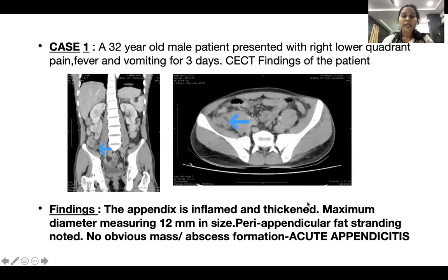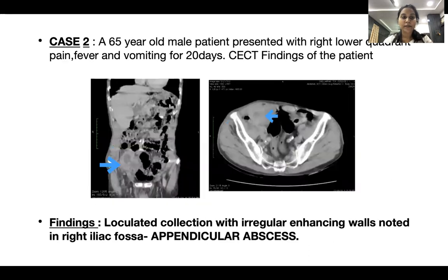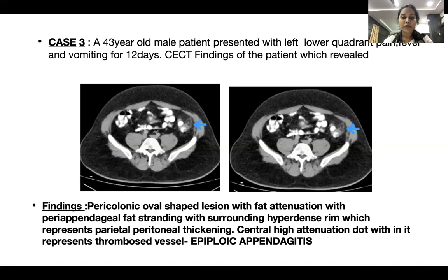Case 1: a 32-year-old male presented with right lower quadrant pain, fever, and vomiting for 3 days. CECT findings showed an inflamed and thickened appendix with maximum diameter of 12 mm, peri-appendicular fat stranding noted, with no obvious mass or abscess formation — a case of acute appendicitis. Case 2: loculated collection with irregular enhancing walls noted in the right iliac fossa — a case of appendicular abscess. Case 3: pericolonic oval-shaped lesion with fat attenuation with peri-appendicular fat stranding and surrounding parietal peritoneal thickening; central high attenuation dot representing a thrombosed vessel — a case of epiploic appendicitis.